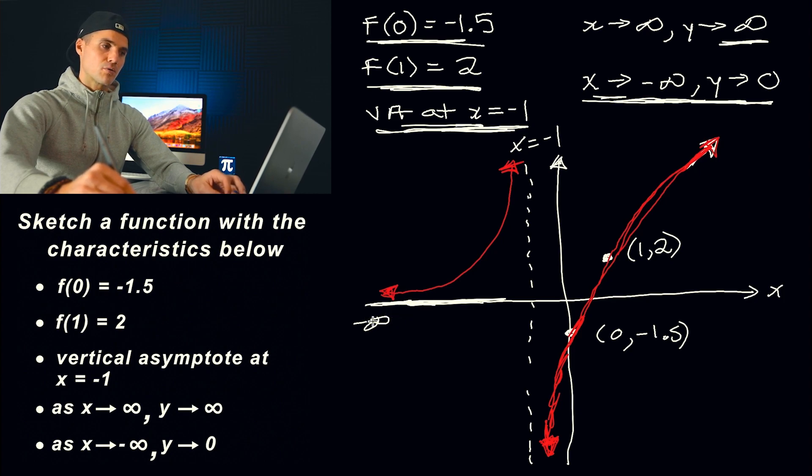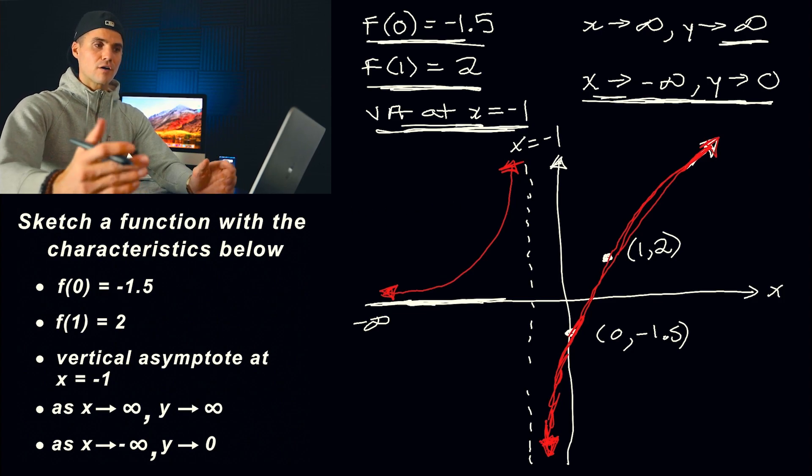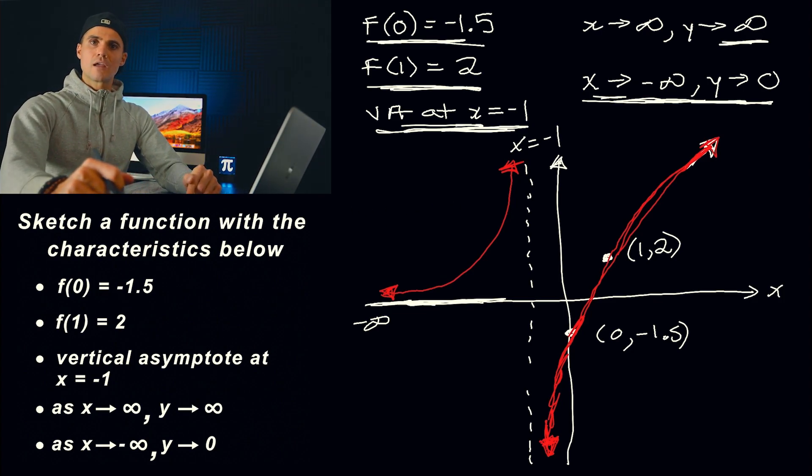As x values are approaching negative infinity, as the x values are getting larger to the negative side, the y values are getting closer and closer to this y value of zero, meaning that there's a horizontal asymptote there. And that there is a function that matches these characteristics.